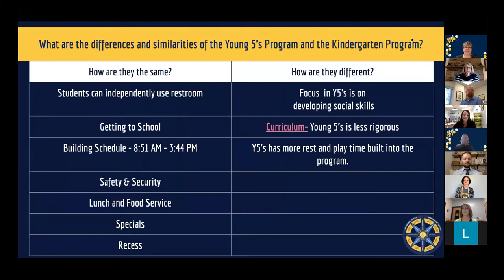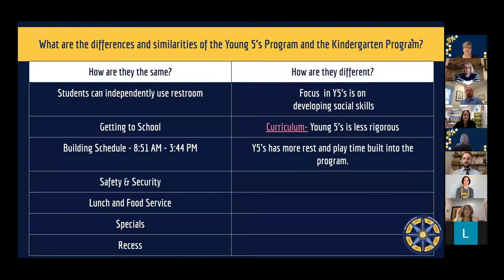Many people ask us: what are the differences and similarities between the Young Fives program and the Kindergarten program? The first similarity is that students can independently use the restroom. This one always brings a chuckle because we know that bathrooming is a normal part of growing up and potty training is a normal part of development for our students.